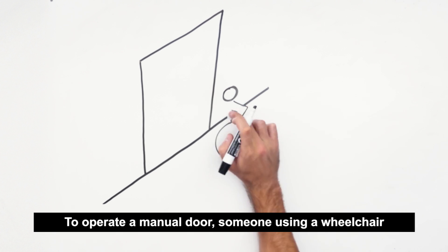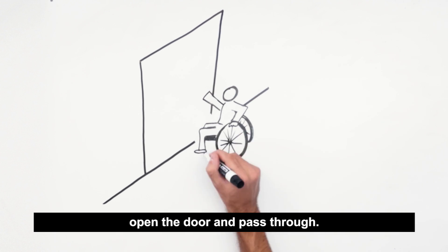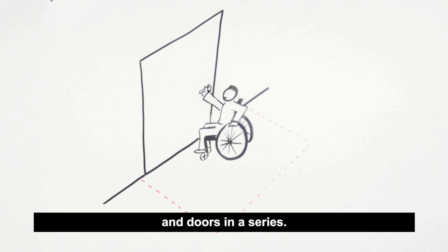To operate a manual door, someone using a wheelchair will require maneuvering clearance in order to open the door and pass through. Consult the accessibility standards for specific requirements related to maneuvering clearance, doors in a recess, and doors in a series.